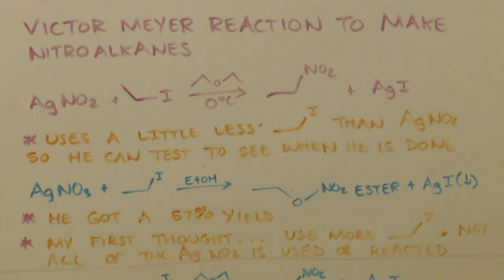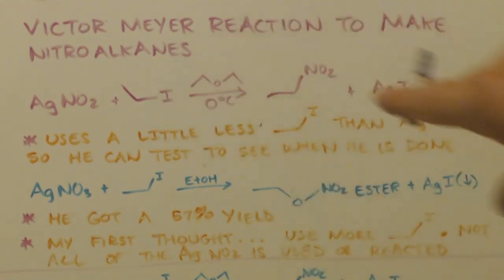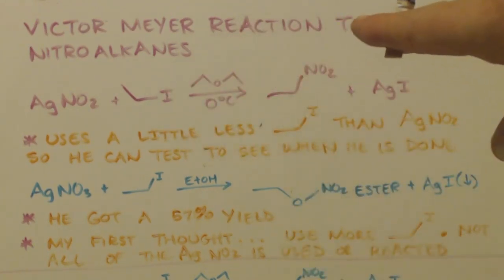I'm here to talk about the Victor Meyer reaction to make nitroalkanes. ChemPlayer already did a video on this, and I have the chemical equation up there because he used ethyl iodide, whereas I'm going to use ethyl bromide. You can see how it comes out. You're going to make some ethyl nitroethane, and the silver iodide will precipitate out. Simple reaction. You use diethyl ether as your solvent.